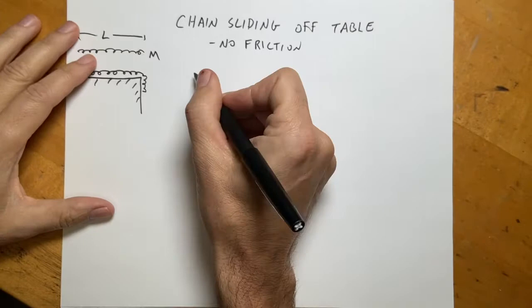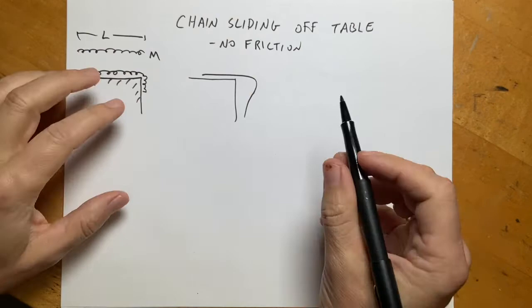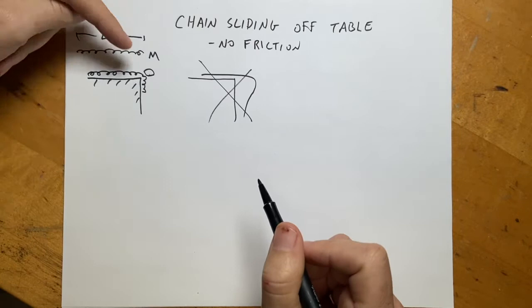In reality, if you had a real chain, once it starts coming off and speeding up, the chain would come off the table in an arc. I'm not doing that — I'm doing a non-realistic case. You can imagine there's some type of pulley that prevents sideways motion and turns it straight down. You could probably reproduce this in real life.